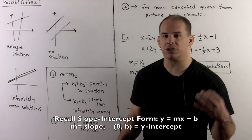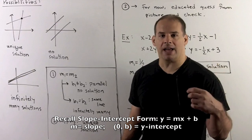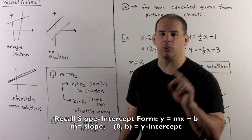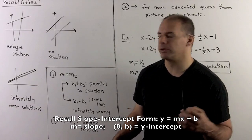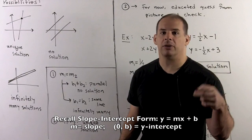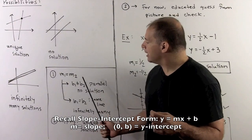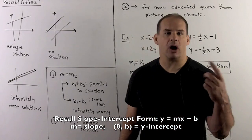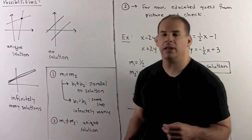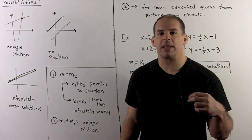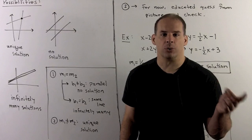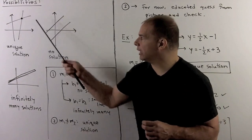To put this in checklist form: put both lines in slope-intercept form, y equals mx plus b. For a vertical line, the slope is undefined. First, check the slopes. If the slopes are equal — including vertical lines with undefined slope — and the y-intercepts are different, the lines are parallel and there's no solution. For vertical lines, check the x-intercepts. If the intercepts are the same, we have the same line with infinitely many solutions. Otherwise, if the slopes are different, we have a unique solution.